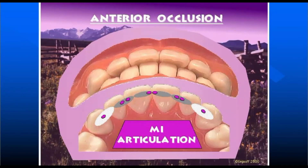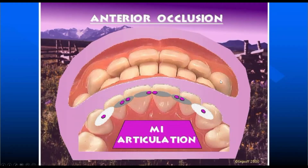Anterior occlusion — MI articulation. MI means maximum intercuspation articulation. The teeth are in contact: lower central incisor, lateral incisor, and canine are in contact with the upper central, lateral incisor, and canine. We will now describe the standard articulation or standard contact points.